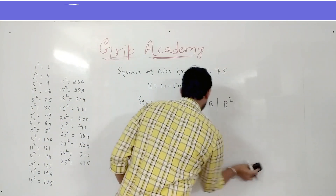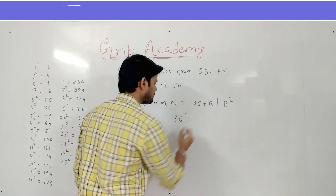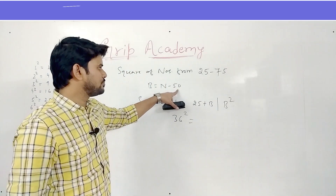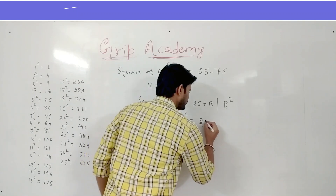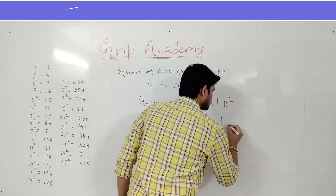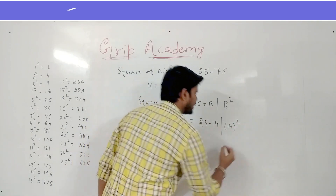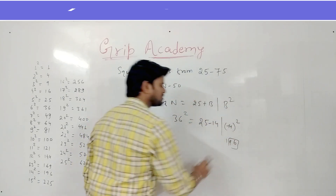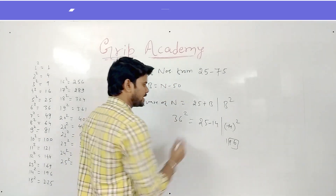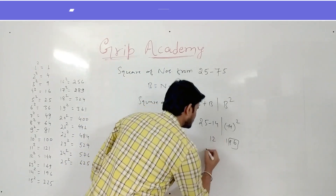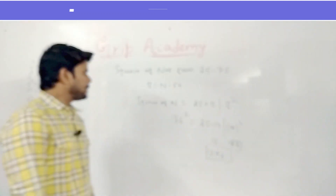Let's find the square of 36. Base is 36 minus 50 equals minus 14. So 25 minus 14, slash minus 14 squared. Minus 14 squared is 196, so 96 stays here and 1 is carry. 25 minus 14 is 11, plus carry 1 is 12. So the answer is 1296.